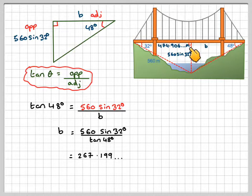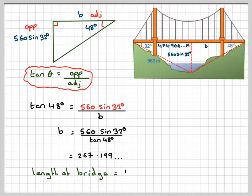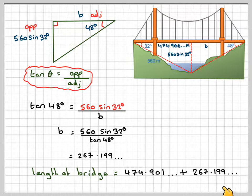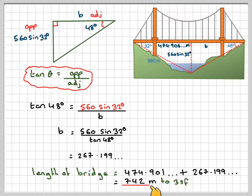So we now have this length and this length, so we can say that the total length of the bridge is going to be 474.901 plus 267.199, which will give me 742 meters correct to three significant figures.